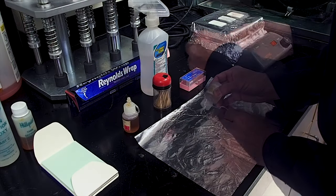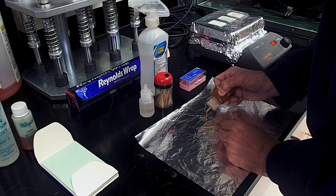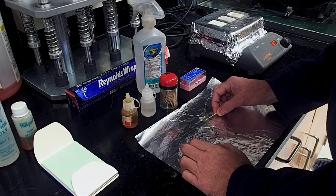The epoxies are mixed together in a 4 to 1 ratio that we approximate by squeezing out 4 drops of Part C and 1 drop of Part D that we then mix together with a toothpick.